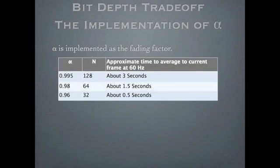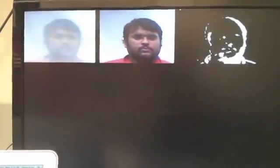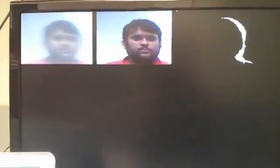We also did some experiments on different values of alpha. It turned out that the better value of alpha is around 0.995. It takes about three seconds for an object to be in the background completely.